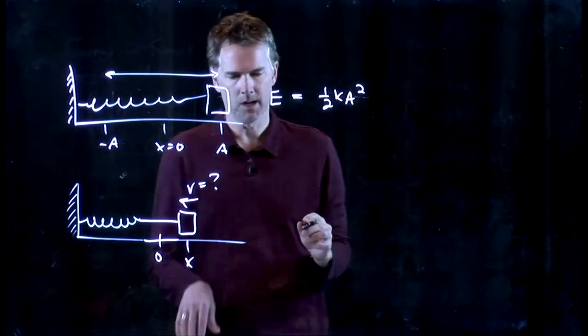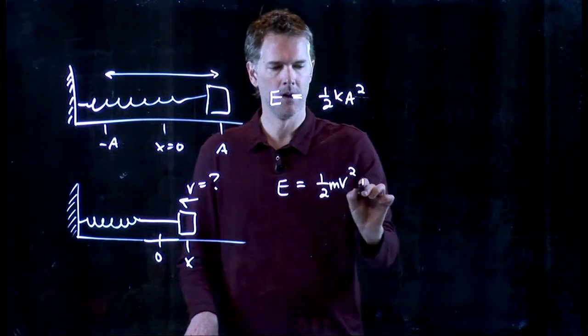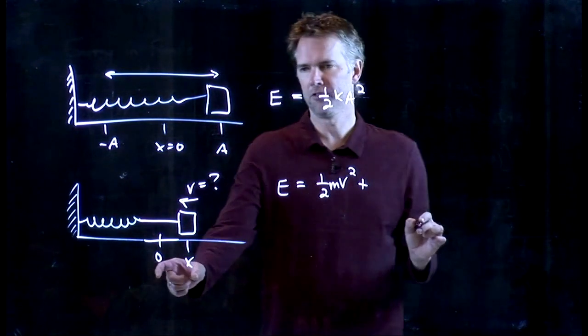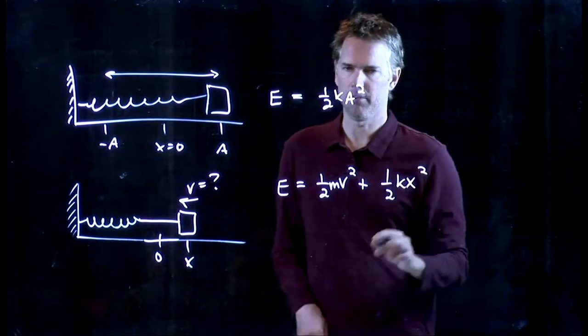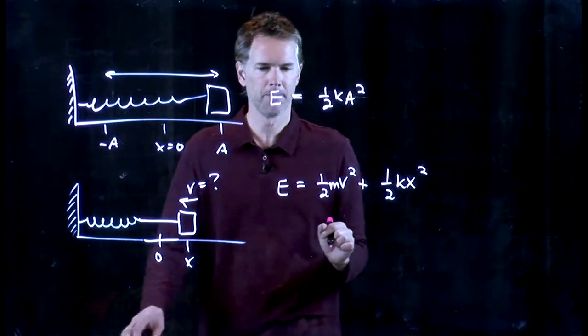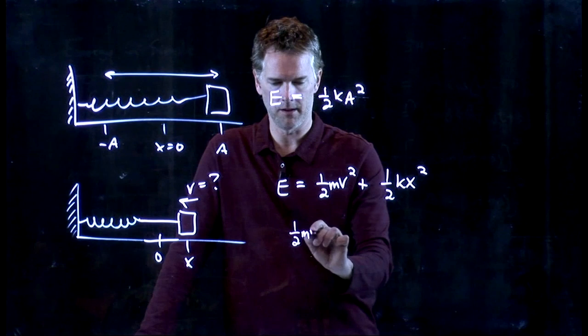At this location, we have kinetic energy, one-half m V squared. But we still have a little bit of stretch of that spring, and so we have to include that in our equation. And now if we set these equal, we can solve this thing for V.